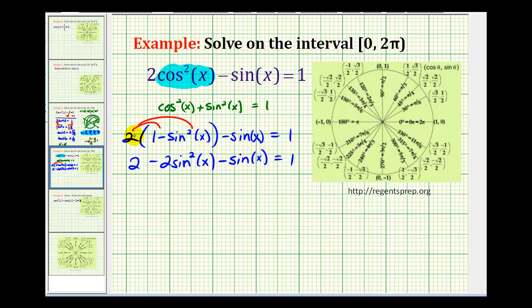We'll end up with -2sin²(x) - sin(x). If we subtract one, we'll have +1 = 0.